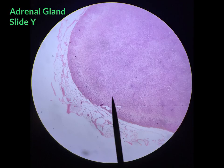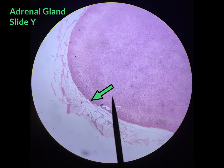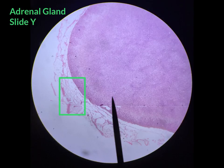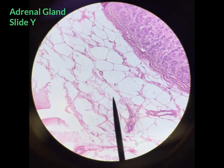When searching for adipose tissue, look on the edge of the specimen. What you're looking for is a honeycomb pattern shown here under low power. Taking a closer look at adipose tissue under high power, you can see the honeycomb pattern arrangement of the cells.